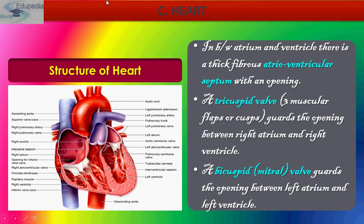There are two types of valves present. First is the tricuspid valve, and second is the bicuspid valve — also known as the mitral valve. The tricuspid valve is a three-muscular-flap structure that guards the opening between the right auricle and the right ventricle. The bicuspid valve guards the opening between the left auricle and the left ventricle.